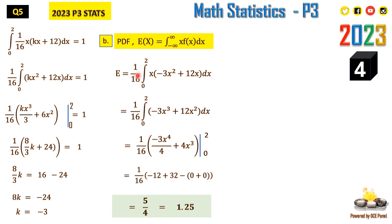Note that we substituted k = −3 here. If you got the wrong value of k in part (a), you will carry that error forward. If I am going too fast, go to your YouTube settings and reduce the speed to 0.75. Now the next thing is to find the variance.